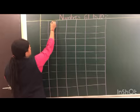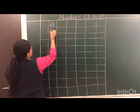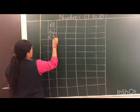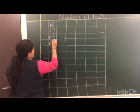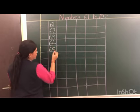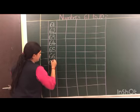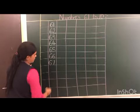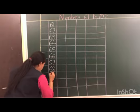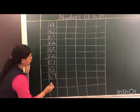So let's begin. 61, 62, 63, 64, 65, 66, 67, 68, 69. After 69 which number comes? 70.